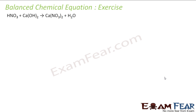We will take one more example. I am taking more equations because the most critical part of chemistry is knowing how to balance chemical equations — it is the foundation of chemistry. So we have HNO3 + Ca(OH)2, which gives Ca(NO3)2 + H2O. Even if you do not know about these compounds, it's okay — you should just know how to balance chemical reactions. Now, is there any polyatomic group? Yes, NO3 is there in both reactants and products, so we will take NO3 as first priority.